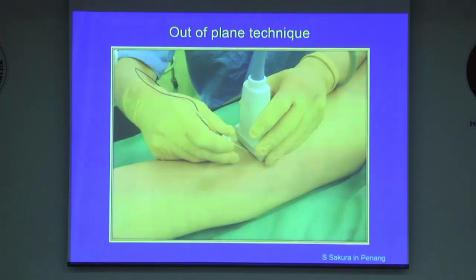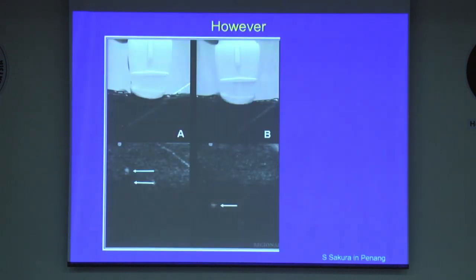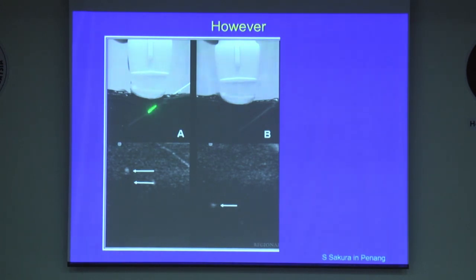The other technique, out-of-plane technique, also has its share of problems. Because you insert a needle perpendicular to the ultrasound beam, the needle is usually seen as a small hyperechoic dot on the screen. However, if you insert a needle like this, it is relatively easy to confuse the shaft for the tip, because both are echogenic dots.